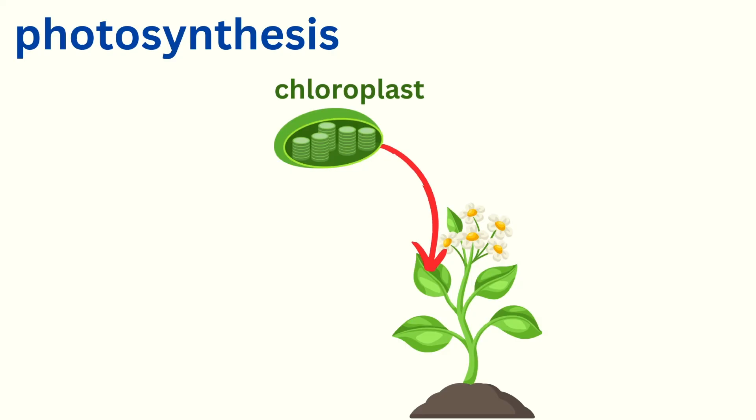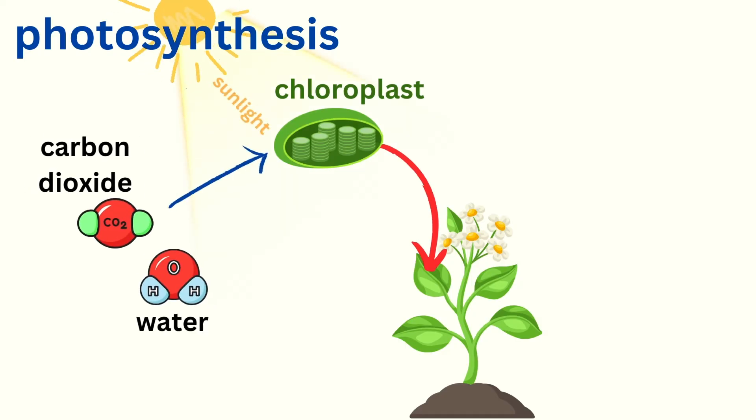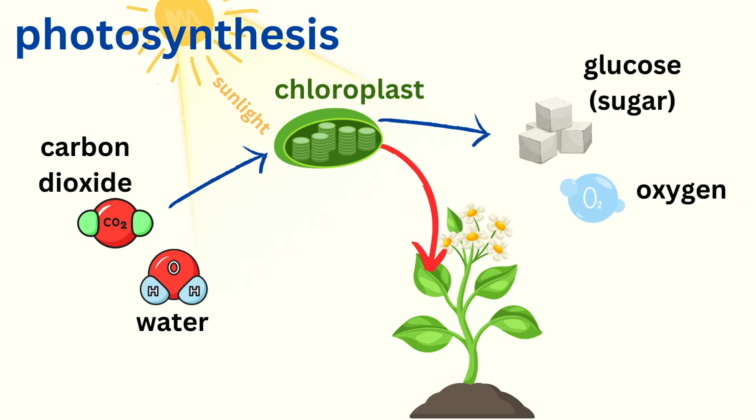To recap, photosynthesis happens in the chloroplasts, where chlorophyll captures sunlight. The plant uses water and carbon dioxide to create glucose for food and oxygen as a byproduct.